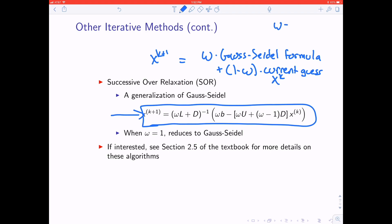Here I should say that omega, for over relaxation, this parameter omega, is usually something greater than 1. If you choose something less than 1, it's called under relaxation. You can find more details about this in the textbook if you're interested.